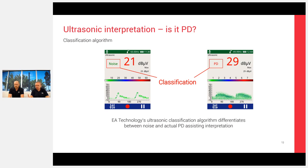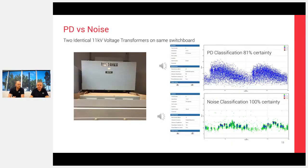The algorithm is really valuable, particularly when starting out. On one screenshot showing 21 dB with a phase-locked pattern, the instrument classifies it as a noise source, not PD. On another screenshot at 29 dB with similar clustering, the instrument classifies it as a partial discharge source. That's a useful guideline to help with interpretation.